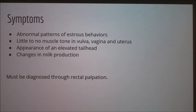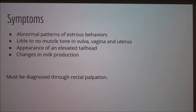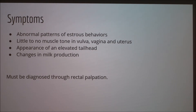You may see a thick, crusty neck; little or no muscle tone in the vulva, vagina, or uterus; and a relaxation of the sacroiliac and sacrosciatica ligaments, which results in the appearance of an elevated tail head. You may also see abrupt changes in milk production. It should be noted that these general symptoms are useful only to give an indication of the problem, but you should always get a definitive diagnosis from a veterinarian doing a rectal palpation.